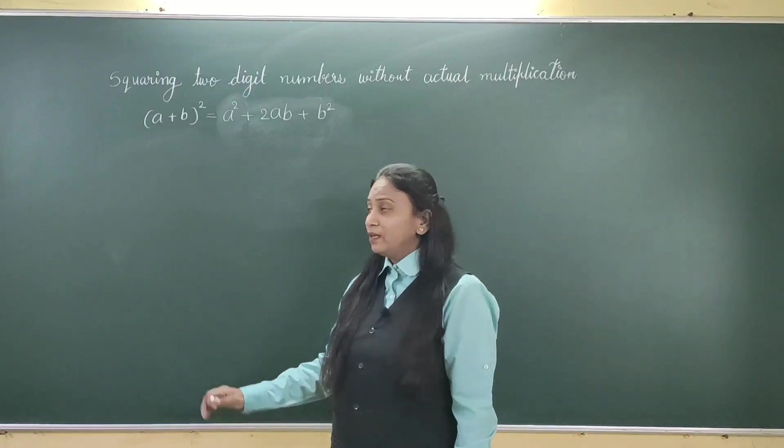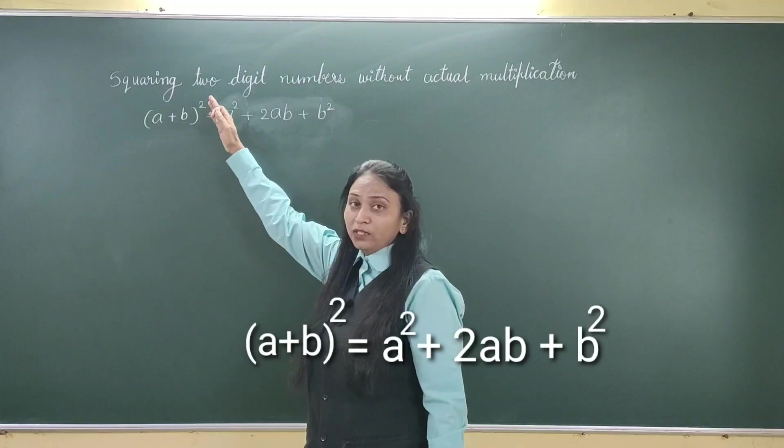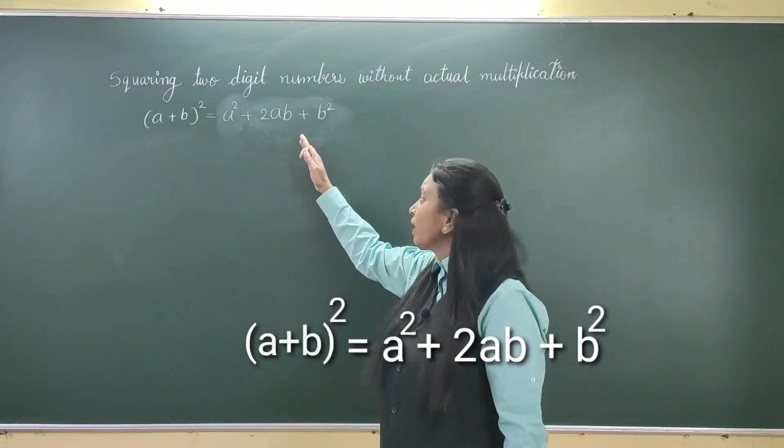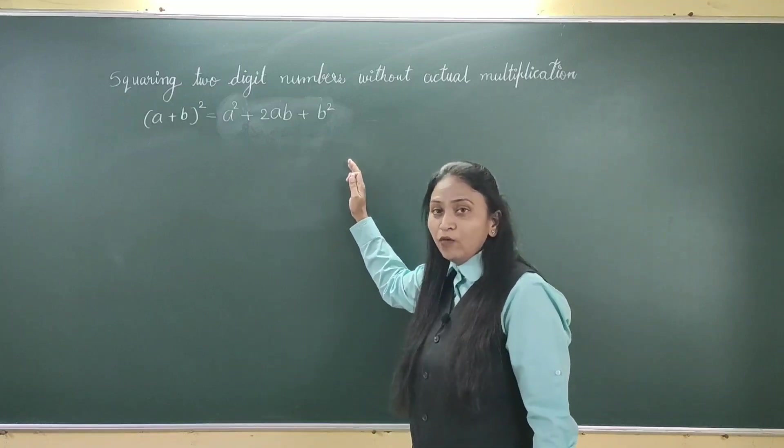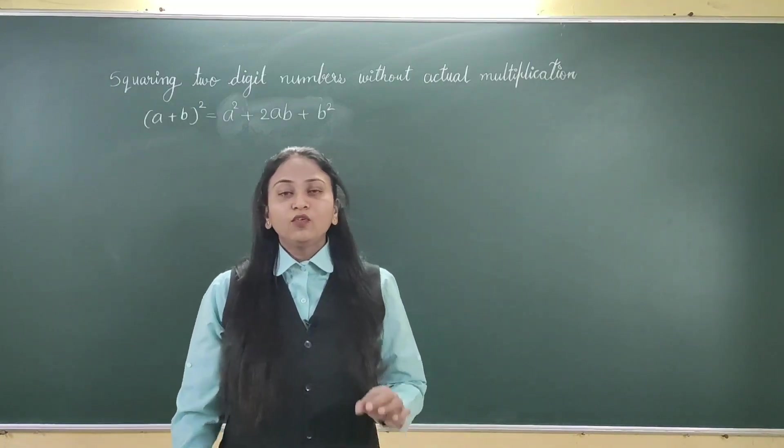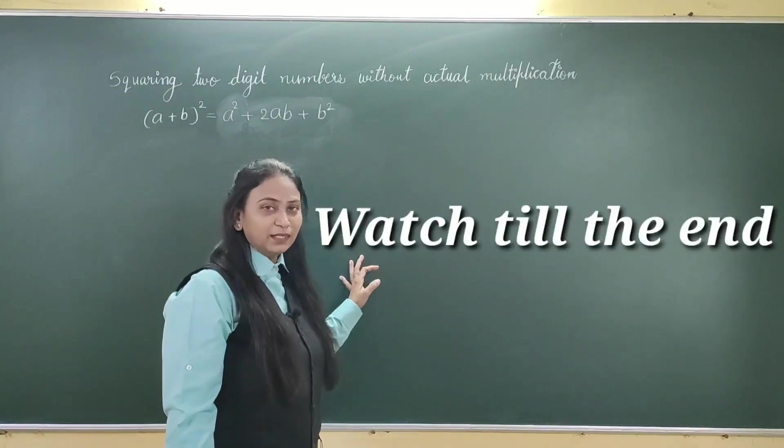This can be done by using the formula (a+b)² = a² + 2ab + b². For this, you will need to know squares of 1 to 9 digits.